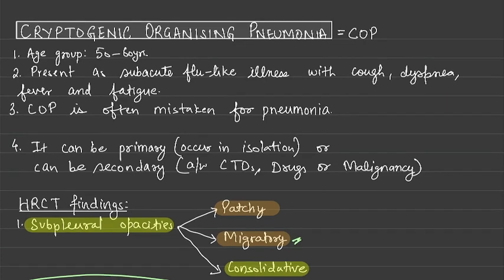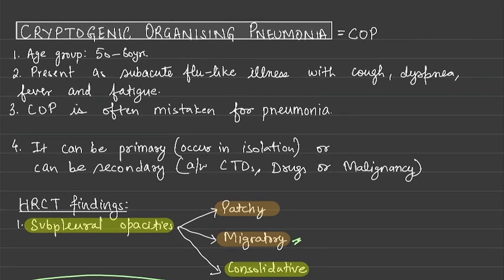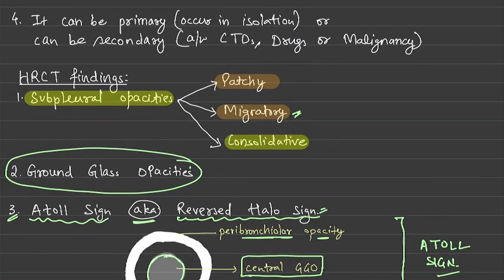To recap, Cryptogenic Organizing Pneumonia: age group 50 to 60, subacute flu-like illness which can be mistaken for pneumonia. Can be primary occurring in isolation, or can be secondary associated with CTDs, drugs, malignancy. HRCT will show subpleural opacities, ground glass opacities, and atoll sign.